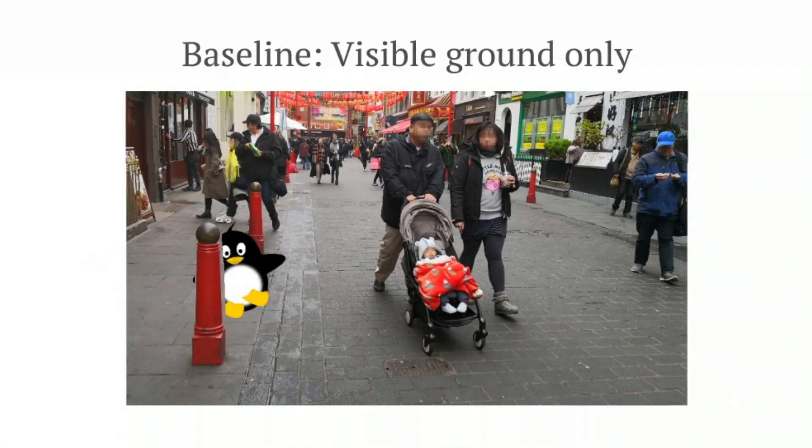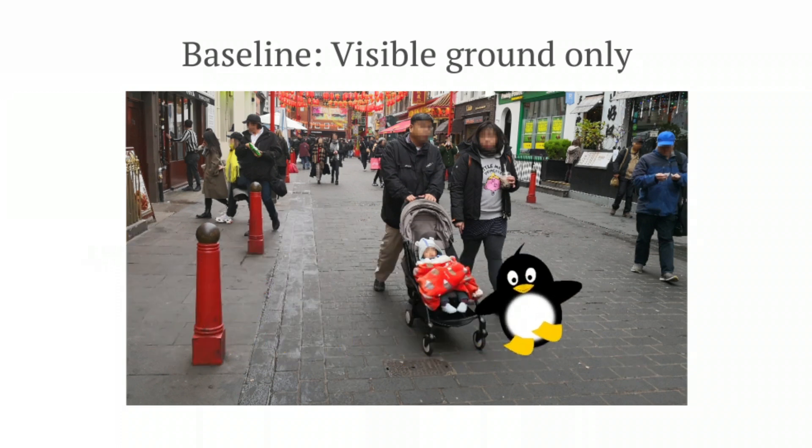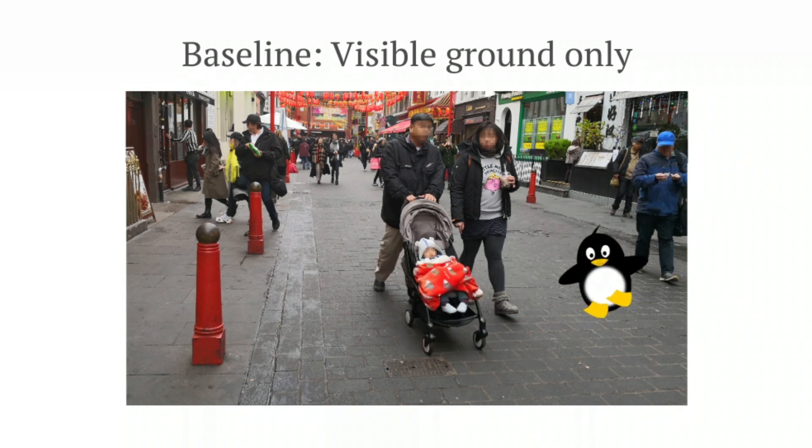We also demonstrate an application for our model: path planning. First, without our model, we see the result of path planning for an augmented reality agent using only the visible ground. Notice how the character must navigate purely in front of objects, as it has no concept of how far back they extend.